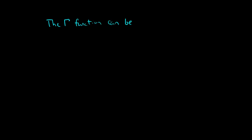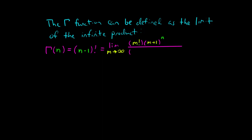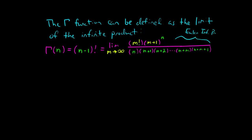When the great mathematician Leonard Euler first discovered the function we now know as the gamma function, he defined it first as the limit of an infinite product. Based on this definition, we write gamma of n equals n minus 1 factorial, which equals the limit as m approaches infinity of m factorial times m plus 1 to the n, all over n times n plus 1 times n plus 2, all the way up to n plus m times n plus m plus 1.